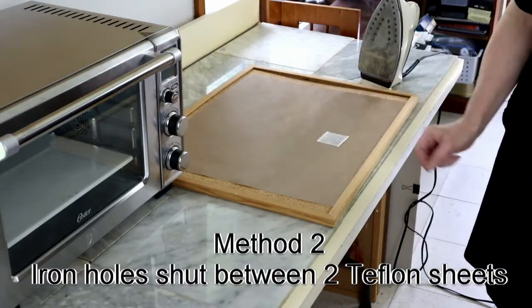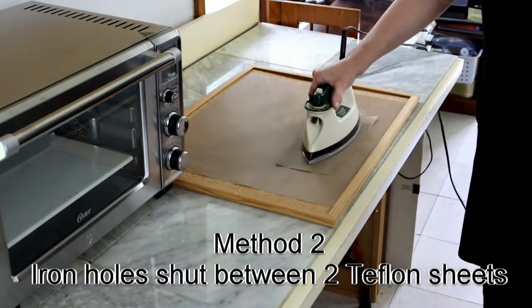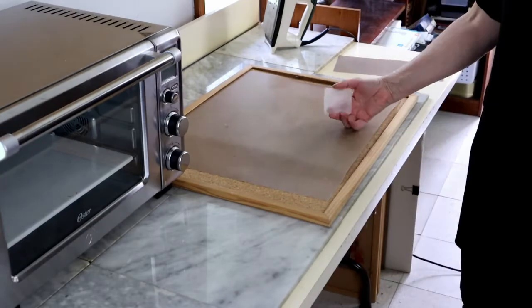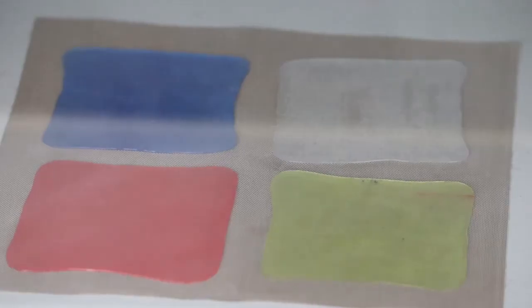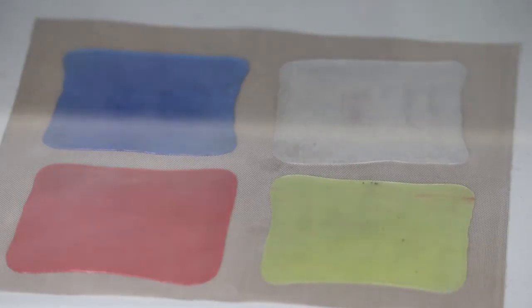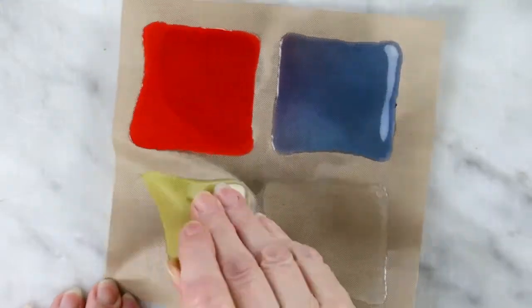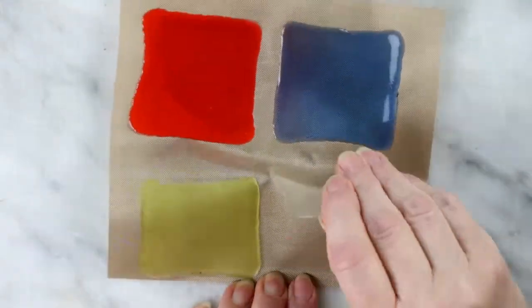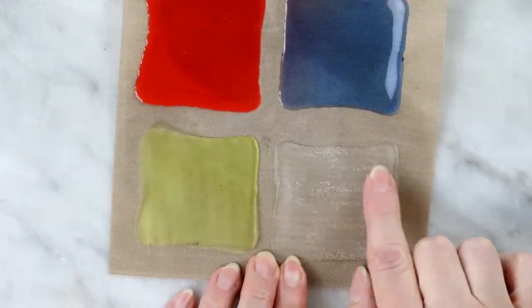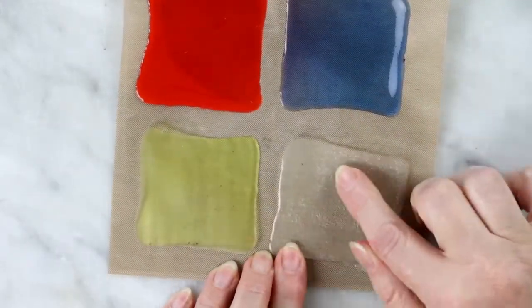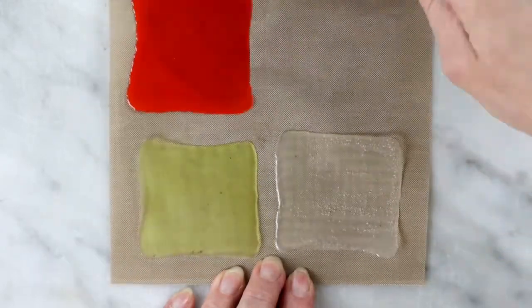If you need a super thin sheet of just one layer, iron the gaps shut between two teflon sheets. They are perfect for that. Again, you may also seal some bubbles during the ironing process, but in solid colors that won't matter.